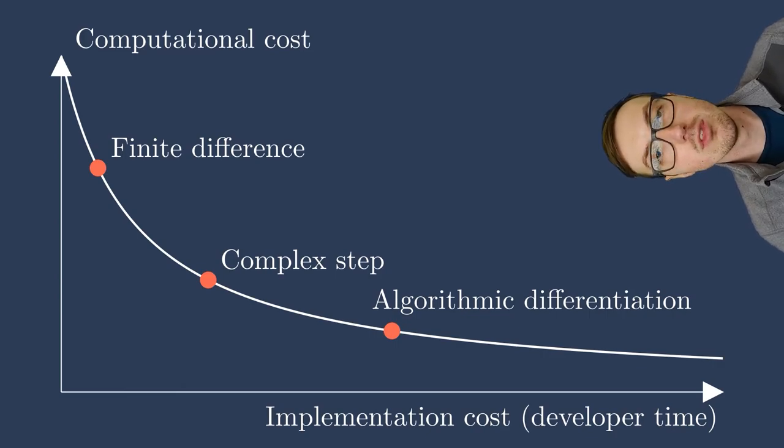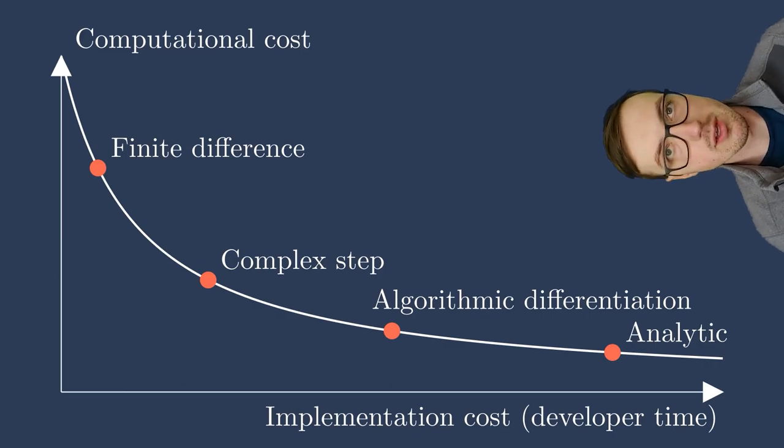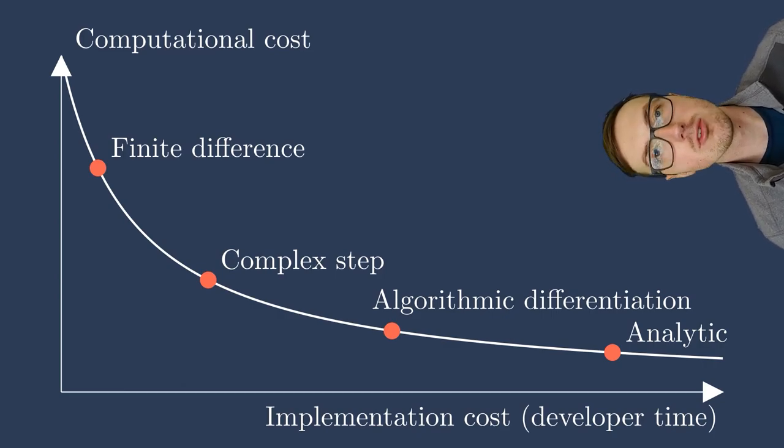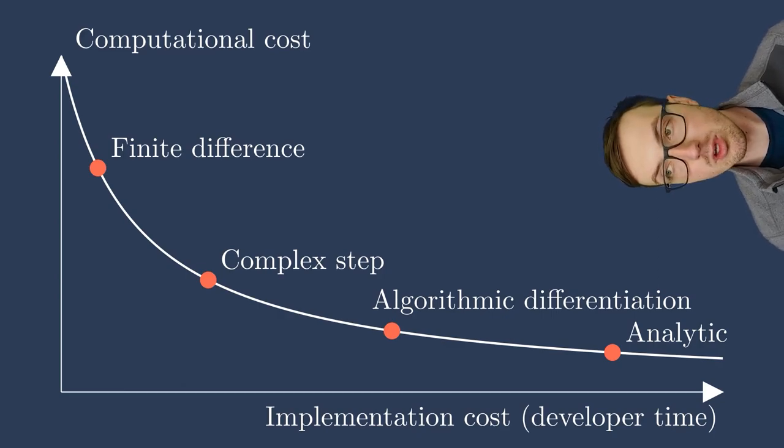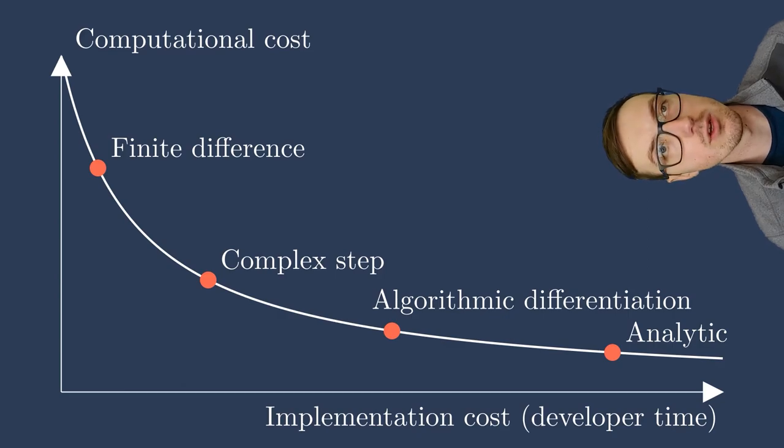And then lastly, here at the far end of the spectrum, I have analytic derivatives. This usually takes the most amount of developer time. You have to sit down with a pen and paper or Wolfram Alpha or ChatGPT nowadays and compute the actual expressions for your derivatives. This hopefully has a much lower computational cost because you have a very straightforward path of computing the derivatives through a series of code or expressions. However, you can imagine that it takes a lot of engineer or developer time or a lot of very intelligent use of machine learning or automatic tools to kind of put together these analytic derivatives.